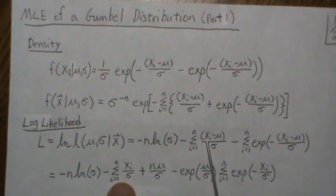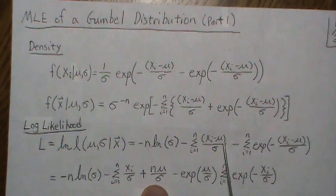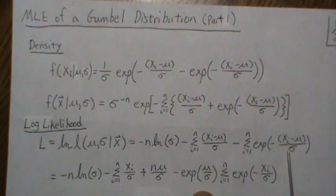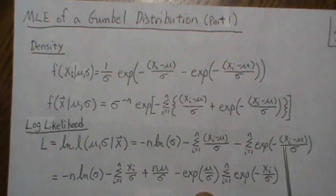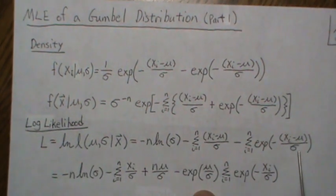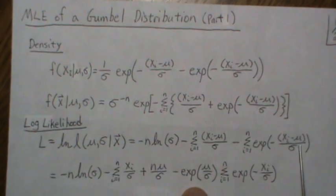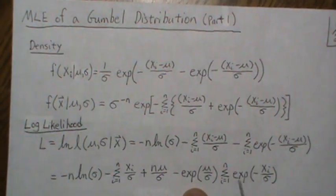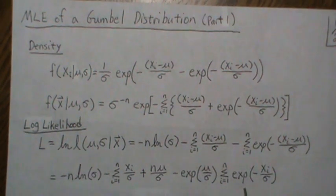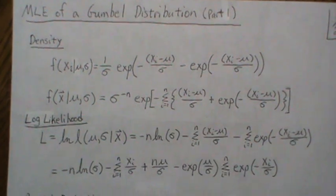We simplify one more step: the terms involving x_i and σ stay inside the sum, while the μ/σ term has no index so it contributes n times. The sum also involves a product of two exponential functions, so we can factor one exponential out front, leaving just the remaining exponential inside the sum. Now we want to maximize this with respect to μ and σ.